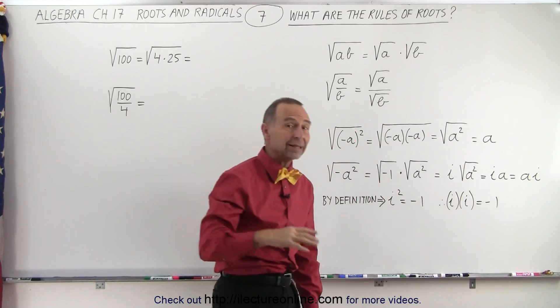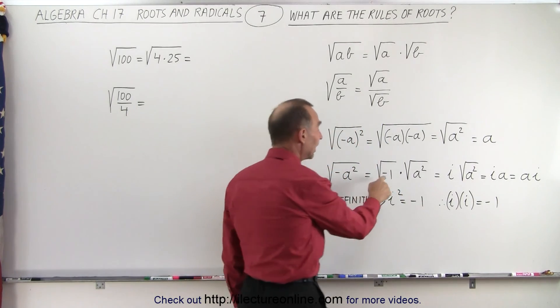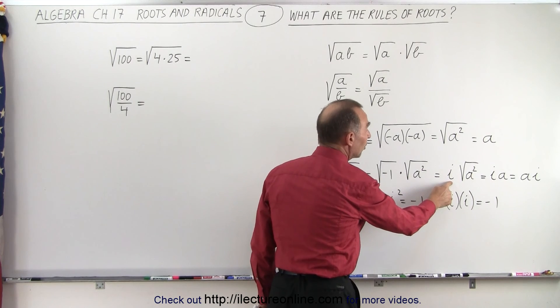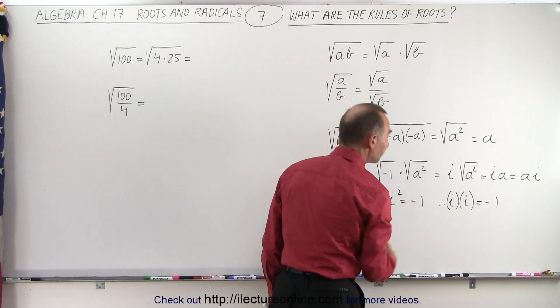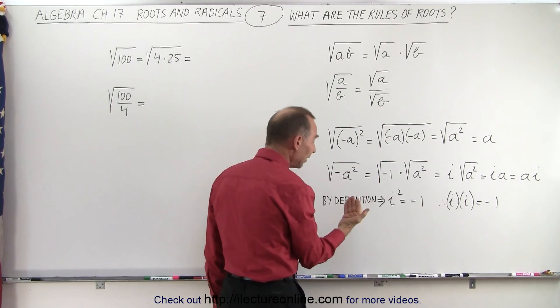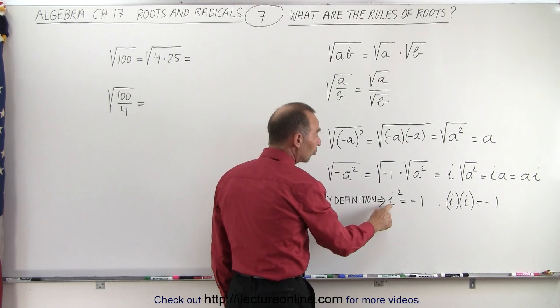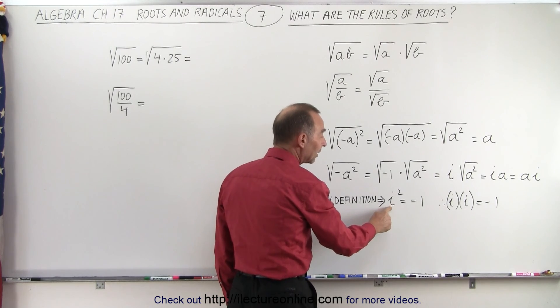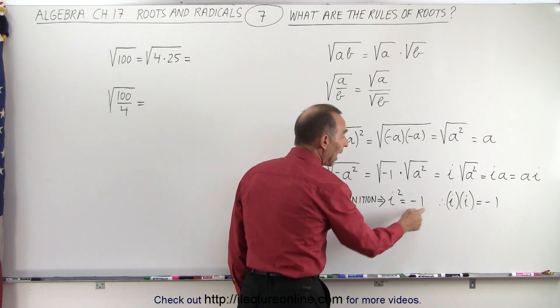But what is the square root of negative one? Well, by definition, the square root of negative one is an imaginary number, i. And by definition, we say that i squared is equal to negative one.